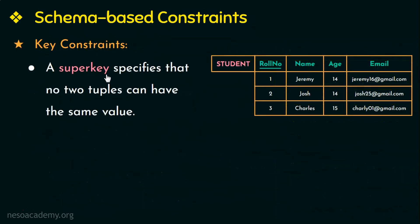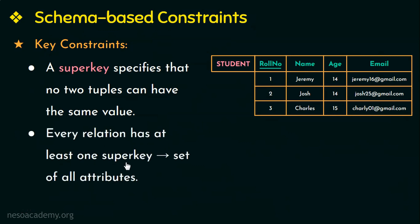Now let us see what a super key is. A super key is a set of attributes that can help in identifying each tuple in a relation uniquely. A super key specifies that no two tuples can have the same value. Every relation has at least one super key by default, and that super key is the set of all attributes. So in the relation student, all the attributes together make a super key that helps in identifying tuples uniquely.